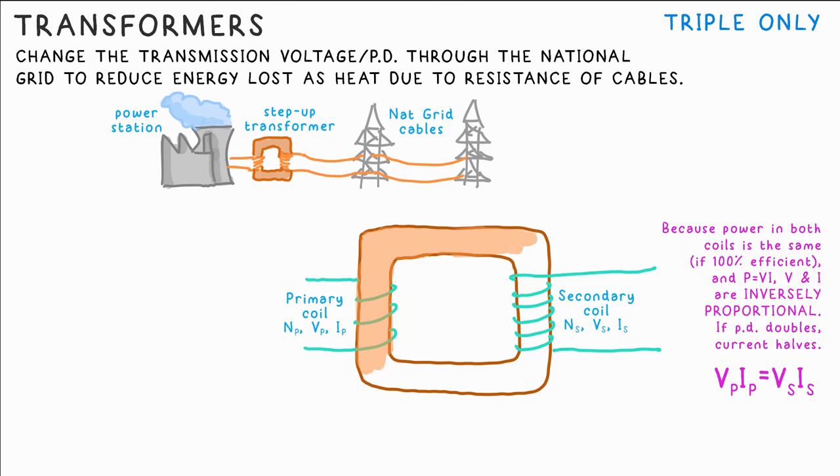This is the basic makeup of a transformer. The primary coil is connected to the power station. The secondary coil is connected to the overhead cables. There are more turns on the secondary coil which means it's a step up transformer. The voltage will increase, the current will decrease. The coils are wrapped around a soft iron core.